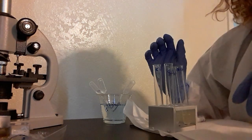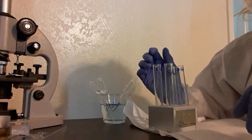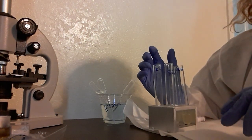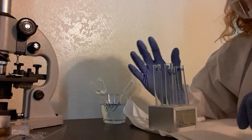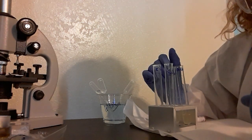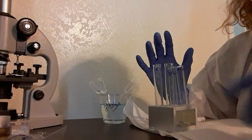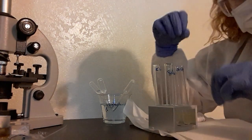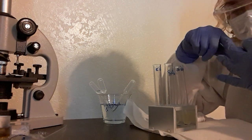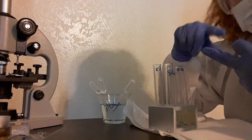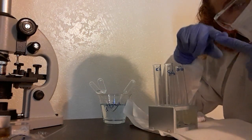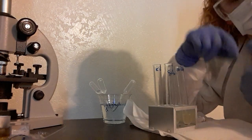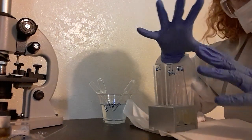This testing, the first one I'm going to do is the methyl red testing. This is going to identify microbes that perform mixed acid fermentation. It's an anaerobic metabolic process. What happens is it produces lactic acid, acetic acid, ethanol, carbon dioxide, and hydrogen gas. That's a lot of stuff going on.